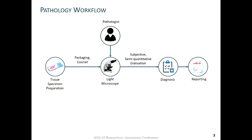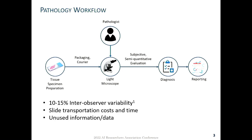Traditionally, for almost two centuries, pathology evaluations are done by examining tissue specimens under a light-field microscope. Such manual evaluations are subject to inter-observer variability, and there is often a lot of unused, undetected data in these tissue samples.